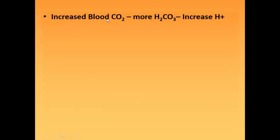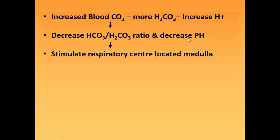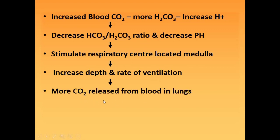If there is an increase in blood carbon dioxide, CO2 combines with water to form H2CO3. Carbonic acid increases, which leads to an increase in hydrogen ions. That means the ratio HCO3 to H2CO3 decreases, and that means there is a decrease in pH. When there is a decrease in pH, this will stimulate the respiratory center located in the medulla to increase the depth and rate of ventilation.